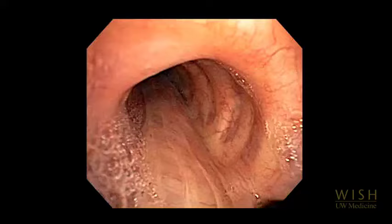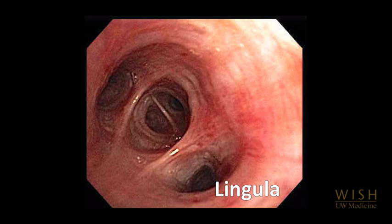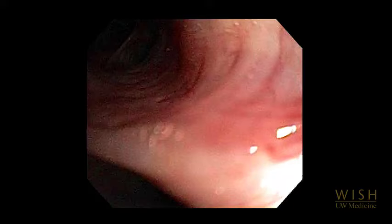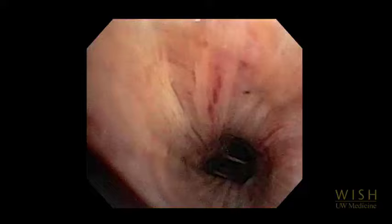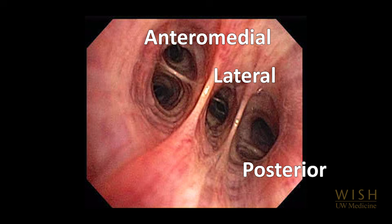The bronchoscope is entering the left main stem. The left upper lobe bronchus takes off anterolaterally. It divides into the lingula, which is medial, and the remaining left upper lobe segments which are anterior and apico-posterior. The lingula divides into inferior and superior segments. The left lower lobe superior segment bronchus takes off posteriorly just below the level of the left upper lobe bronchus. The left lower lobe bronchus then divides into anteromedial, lateral, and posterior segments, forming the mnemonic ALP when the bronchoscope is held in anterior-posterior orientation in the left lower lobe bronchus.